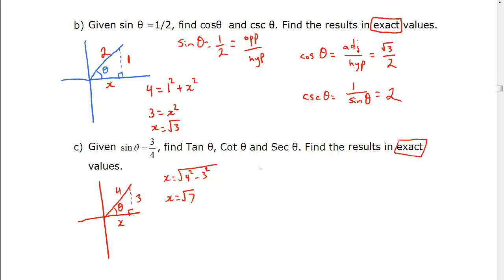We need tan, so tan of θ is going to be opposite over adjacent. We also need cotangent of θ, which is 1 over tan of θ. So we can find that shortly. And we need secant θ, which is 1 over cosine of θ. And we know cosine is adjacent over hypotenuse. And so we'll find that.